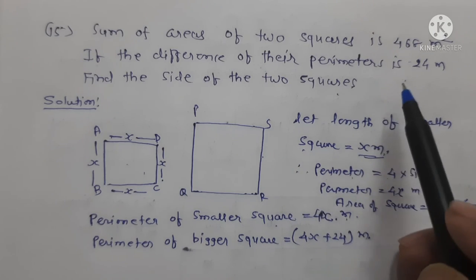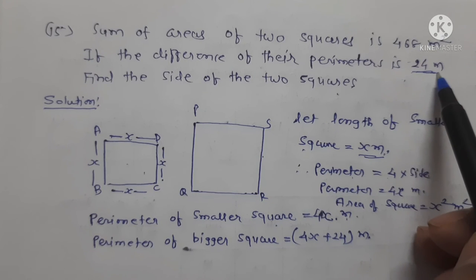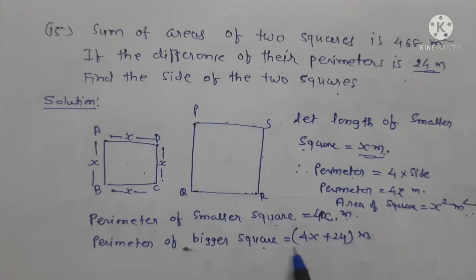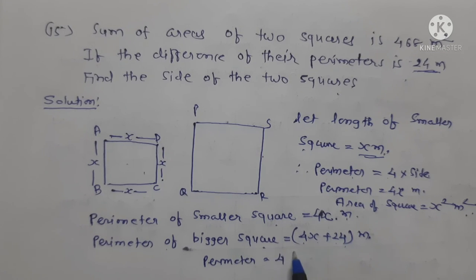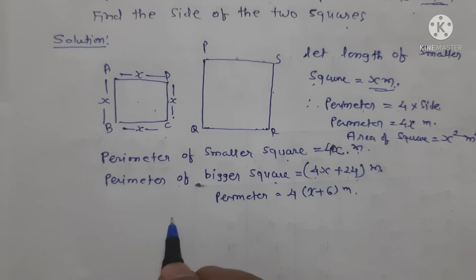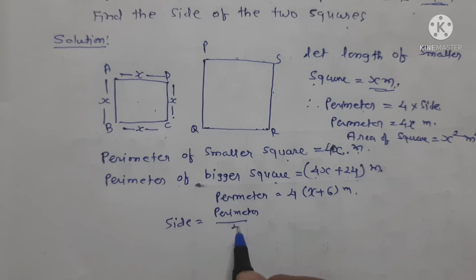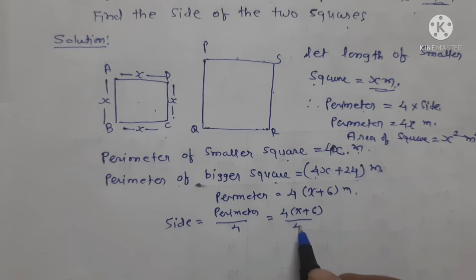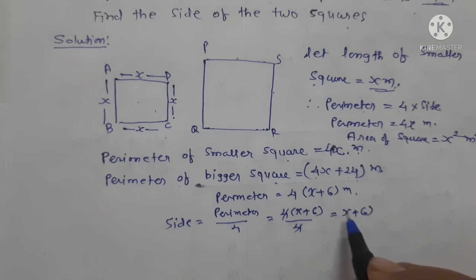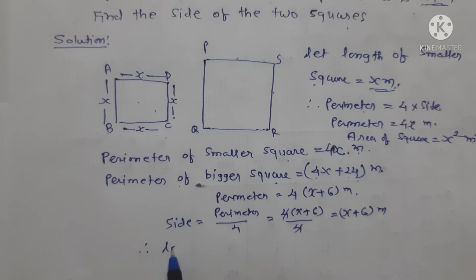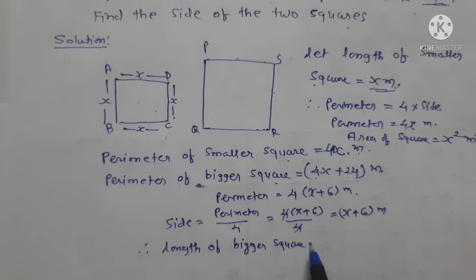Given that the perimeter of the bigger square is 24 meters more. Therefore perimeter of bigger square equals 4x plus 24 equals 4(x plus 6) meters. Therefore the length of the side of the bigger square equals (4x plus 24) upon 4, which simplifies to x plus 6 meters.